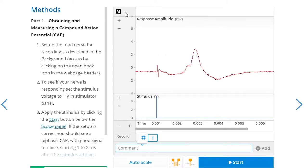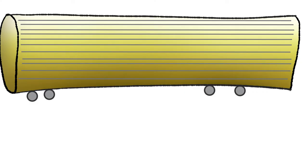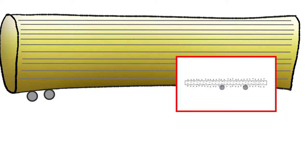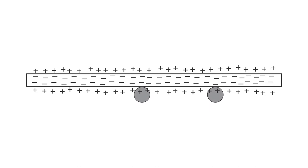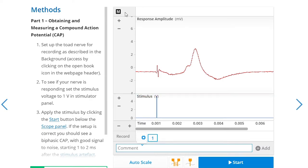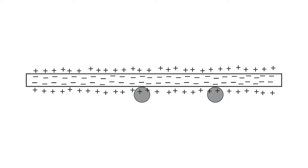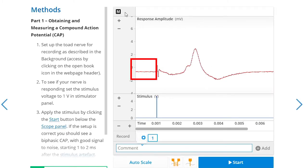The compound action potentials we're seeing in the LabChart window occur because of what's been detected at the recording electrodes. In their resting state, axons are negatively charged on the inside compared to the outside, so the outside of axons tends to be more positively charged. The recording electrodes are external, so they can only detect the environment on the outside of the axons. The trace on screen is just the difference in charge between the two recording electrodes. In the resting state, when both electrodes are in the same environment, there's no difference in charge, and so the response on screen is flat — as shown at the start of our trace before we've stimulated the nerve.